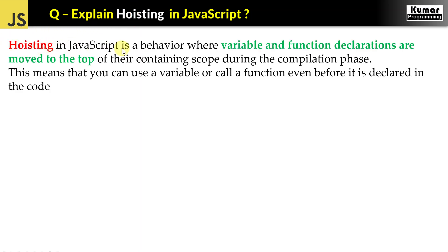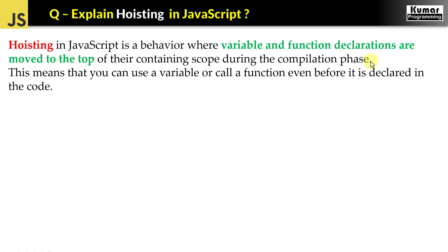Hoisting in JavaScript is a behavior, or we can say a default behavior, where variable and function declarations are moved to the top of their containing scope during the compilation phase. This means that you can use a variable or call a function even before it's declared in the code.